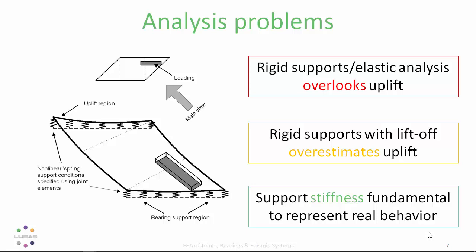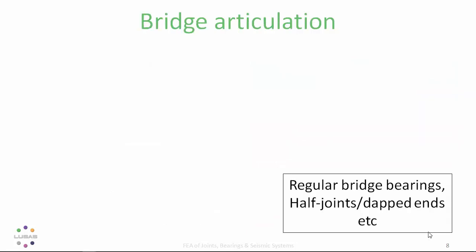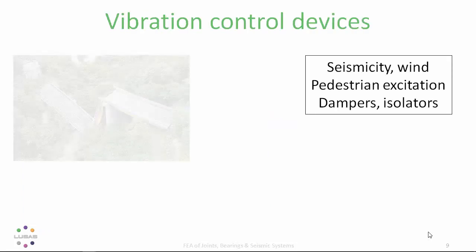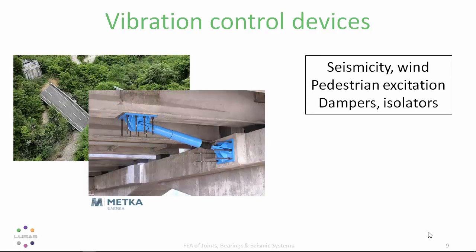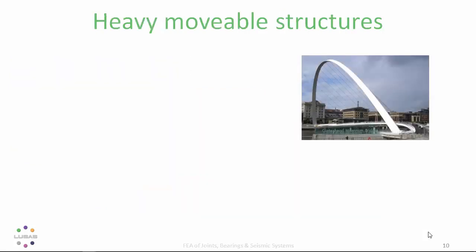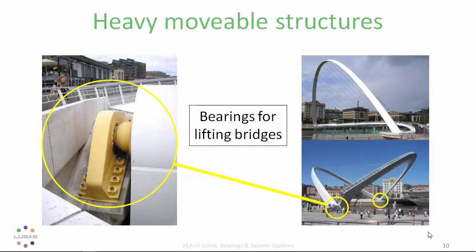The structures we build generally include a wide range of joints and bearings, like regular bridge bearings accommodating temperature movements, half joints, pin and hanger joints, vibration control devices for seismic or wind or pedestrian excitation using dampers or isolators, and bearings which rotate or slide to allow movement of heavy structures. How we deal with these analytically falls generally into two categories.